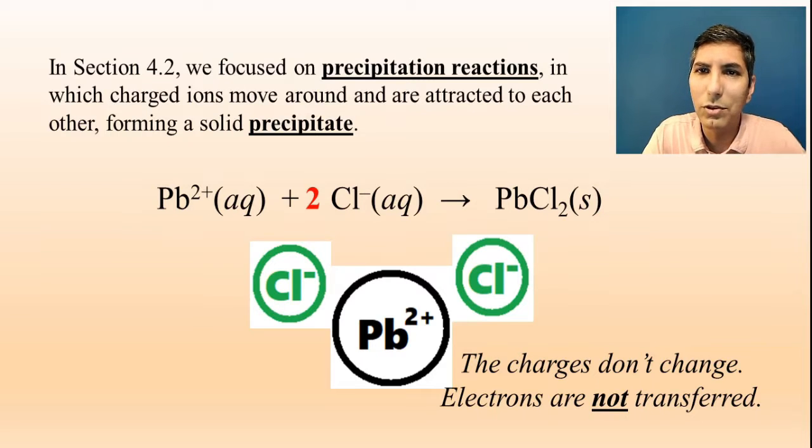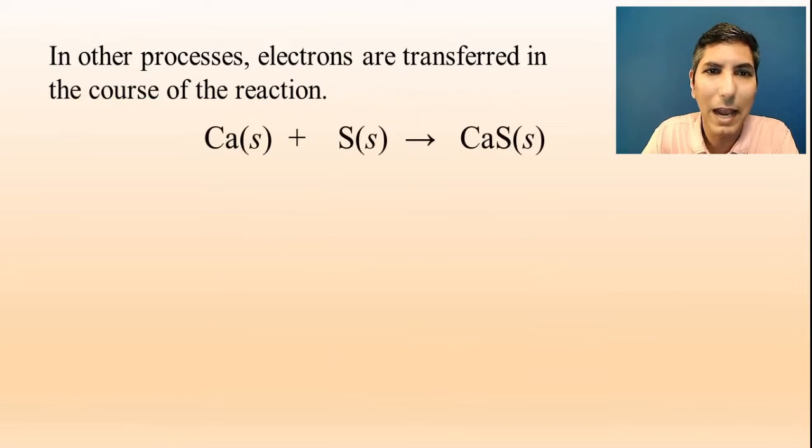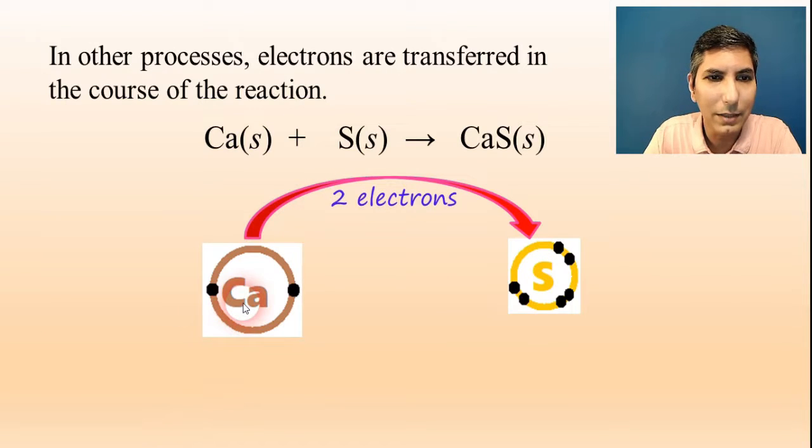In this section, we're learning about a new type of reaction called an oxidation-reduction reaction, where electrons are actually transferred over the course of the reaction. Let's say we have this process: calcium and sulfur yields calcium sulfide. We can imagine there's one calcium atom with two valence electrons, and sulfur with six valence electrons, and they want to get together. What's going to happen is calcium is going to donate these two valence electrons to the sulfur. There's an actual transfer of the electrons.